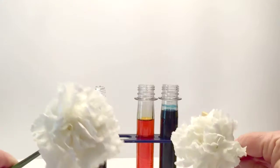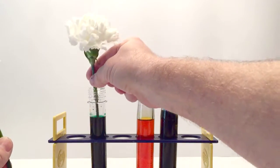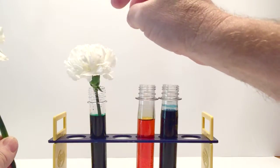I'm going to do two different experiments. So I'm taking one carnation, white carnation, and putting it in the green. We know that's going to probably turn green.